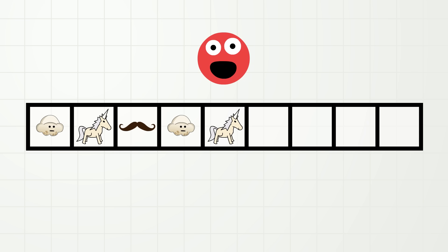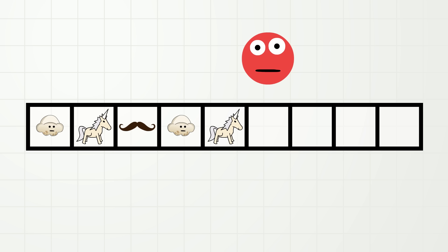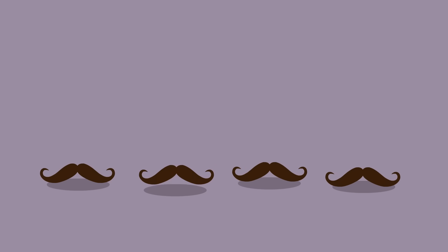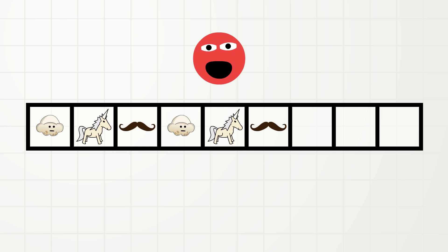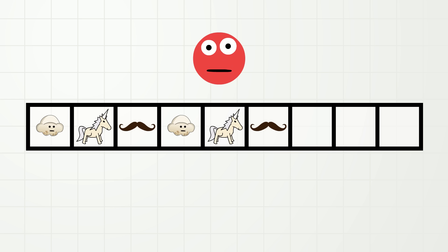And after unicorn, what would come next? That's right, it would be mustache! Question number two: what do you think would happen if the pattern keeps going? Do you think it would stay the same or be different? That's right, it would stay the same! The pattern would be the same before and after.